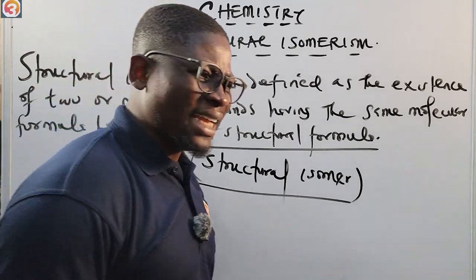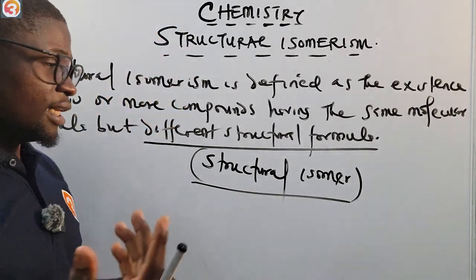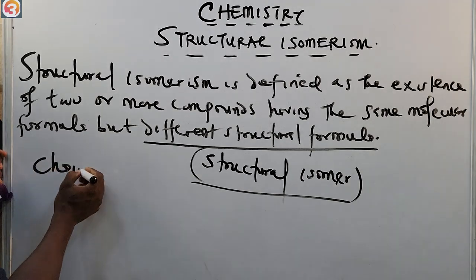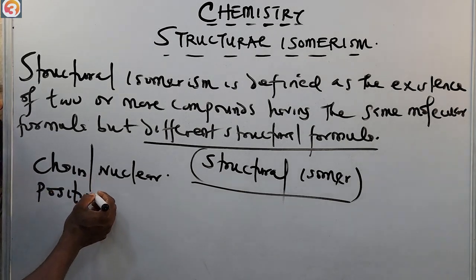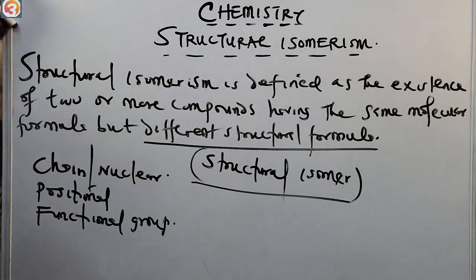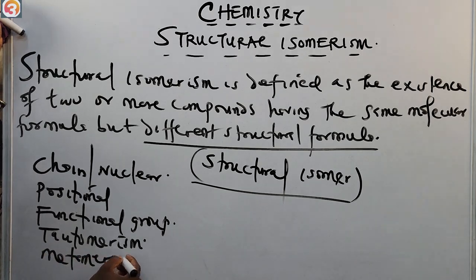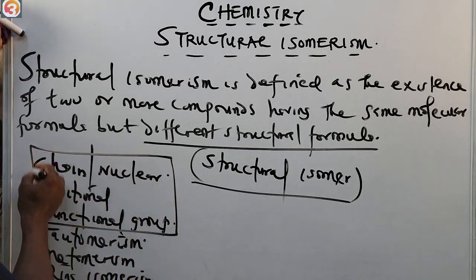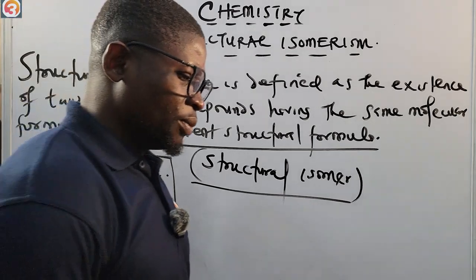Based on how they differ in their structures, there are five major types of structural isomerism: chain or nuclear isomerism, positional isomerism, functional group isomerism, tautomerism, metamerism, and ring isomerism. However, according to the scope of your syllabus, we are only going to talk about chain, positional, and functional group isomerism.